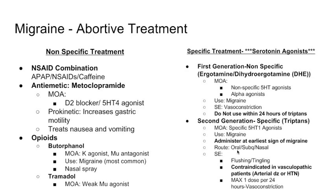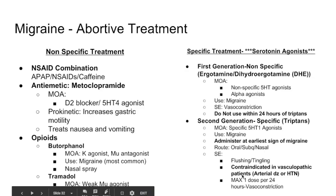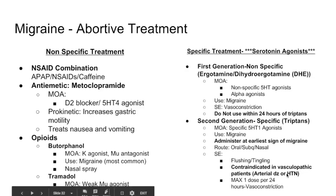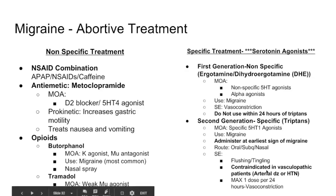Triptans come in oral, subcutaneous — where the patient injects under the skin — or nasal routes. Side effects include flushing and tingling. They are contraindicated in vasculopathic patients — meaning those with arterial disease such as coronary artery disease or peripheral vascular disease — or hypertension, because they cause vasoconstriction and will worsen arterial disease. There is a maximum of one dose per 24 hours because of the vasoconstriction.